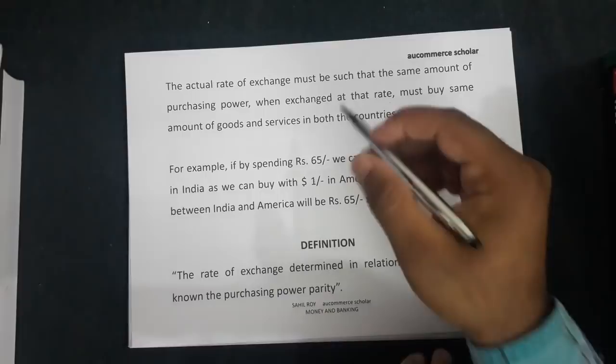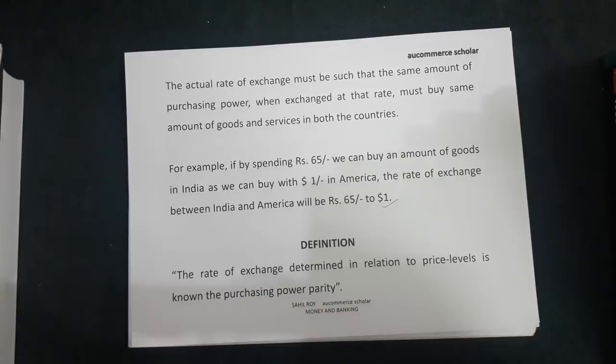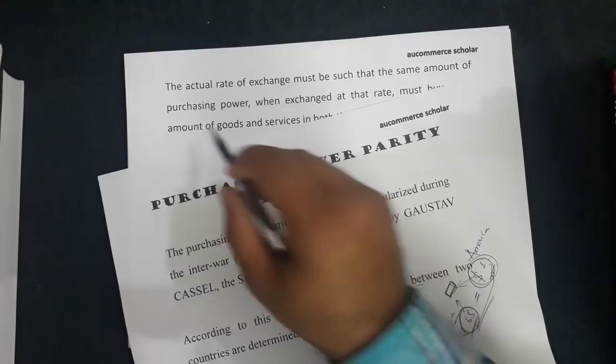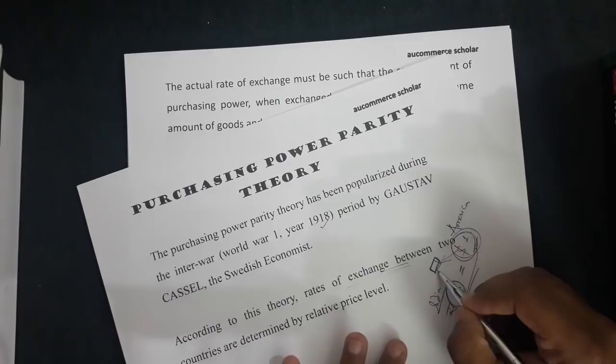The actual rate of exchange must be such that the same amount of purchasing power, when exchanged at that rate, must buy the same amount of goods and services in both countries. On this basis we will determine the exchange rate — that we can take the same amount of goods in different countries.